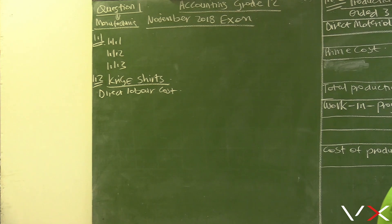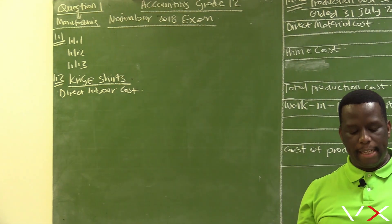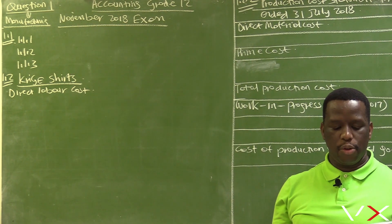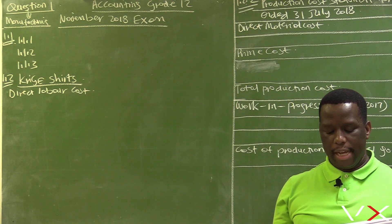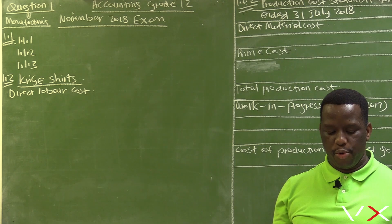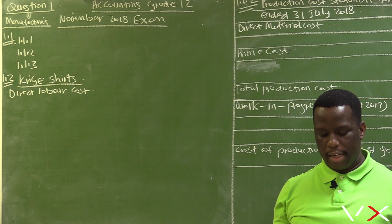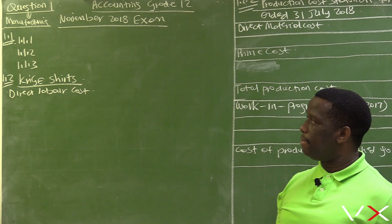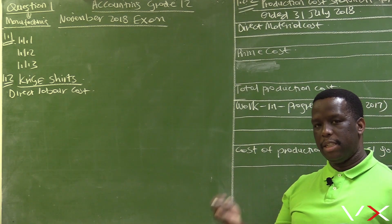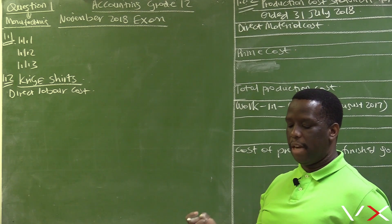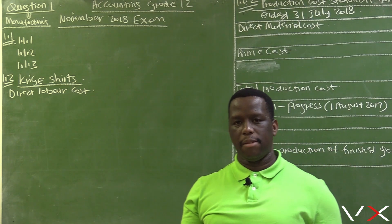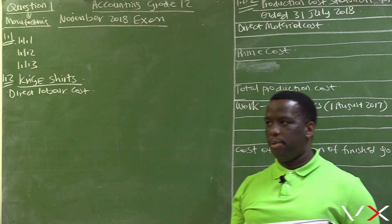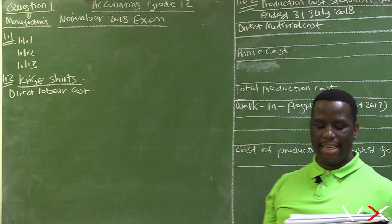Question 1.1 says: indicate whether the following statements are true or false — write only true or false next to the question numbers 1.1.1 to 1.1.3 in the answer book. Remember, in the manufacturing industry we have three departments: we have an administration department, we have a factory department, and we also have a selling and distribution department. The production takes place in the factory department.